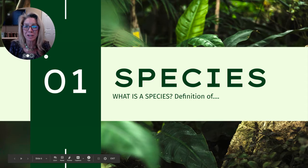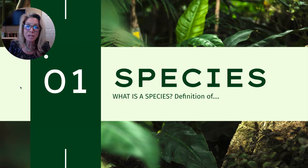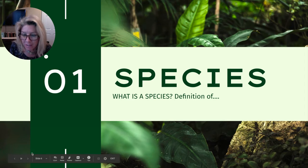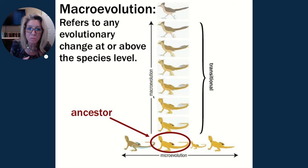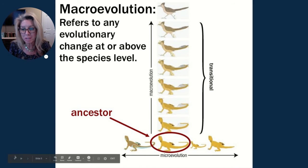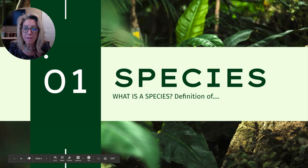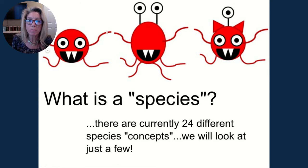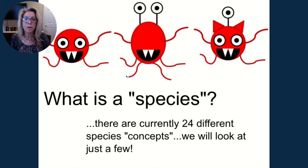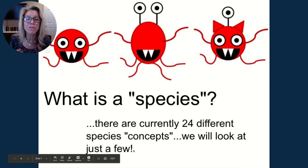The first thing we need to know is: at what point do you have a new species? We need to define that. When you look at an organism, what is most important — the number of eyes, where the teeth are, where the eyes are, how many tentacles? There are currently over 24 different species concepts trying to account for all the different organisms on our planet.